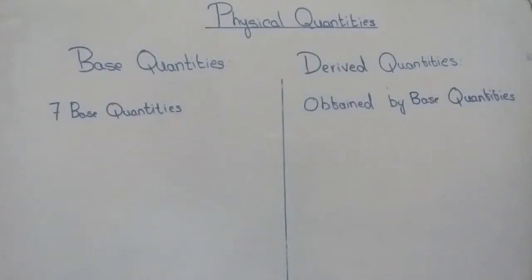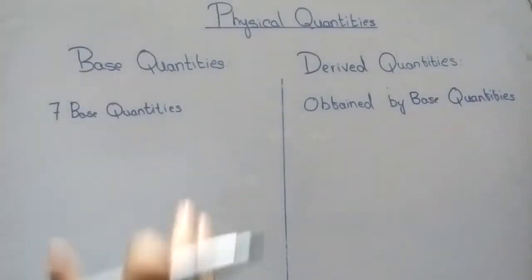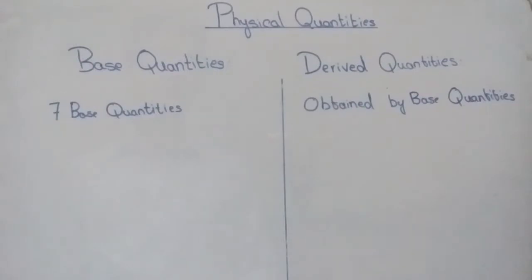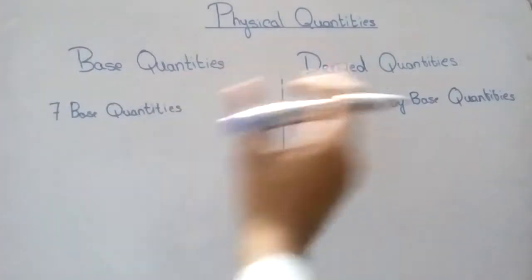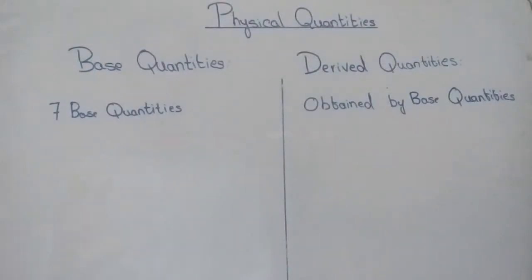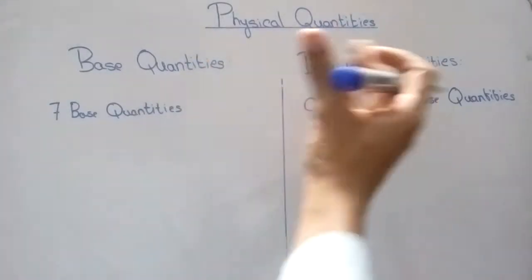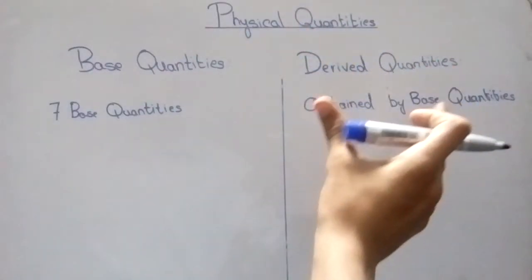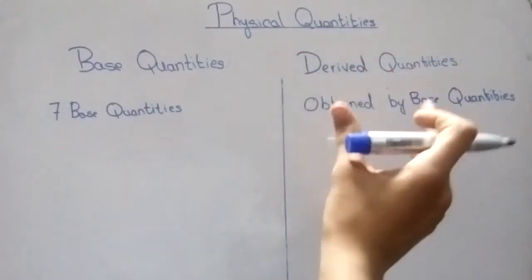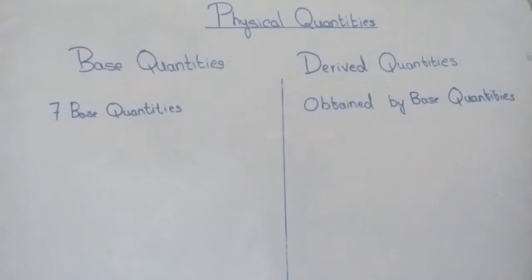Physical quantities are divided into two types: base quantities and derived quantities. Base quantities are fundamental quantities from which other quantities can be derived. Derived quantities are actually derived from the base physical quantities.